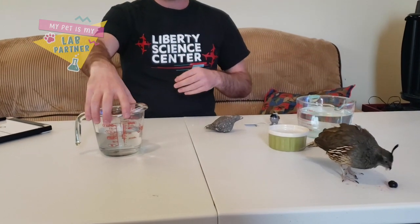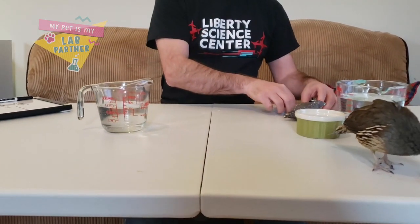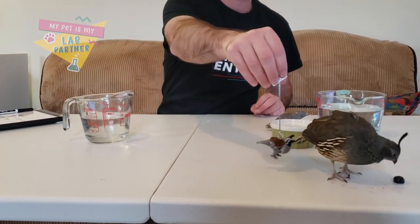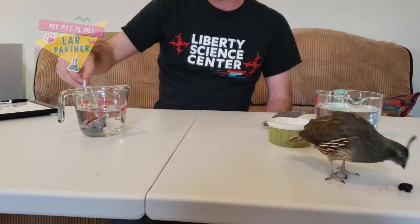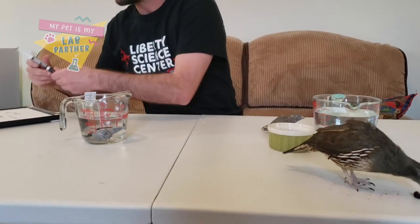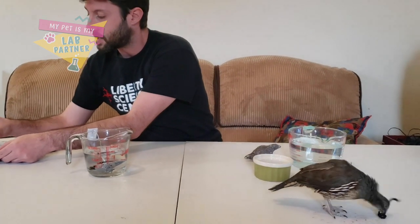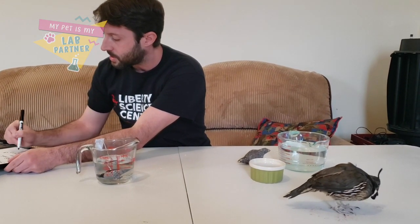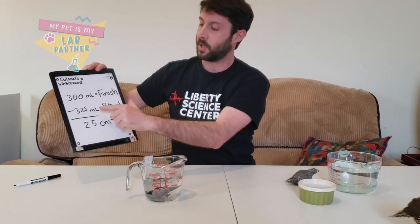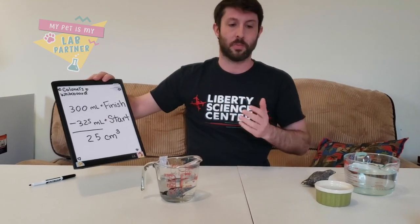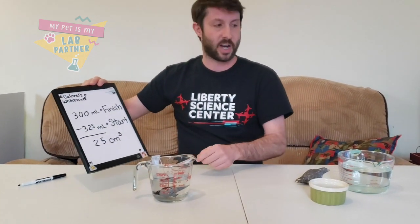So first, we have our glass quail. You can see it is quite a bit smaller than Colonel Quail, and we are starting at about 300 milliliters. We are going to put our glass quail in the container. We started at 300, and we can see that it has gone up to about 325 milliliters, which gives us a difference of 25. And milliliters is exactly equal to centimeters cubed — centimeters cubed is what we use for volume. So that is the volume of our glass quail.